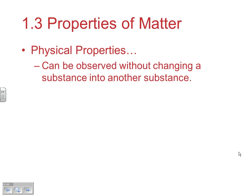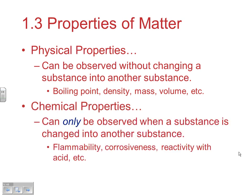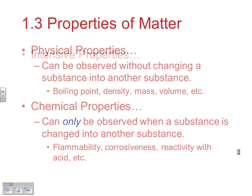Physical properties are properties that can be observed without changing into another substance — boiling point, density, mass, volume. Boiling changes a liquid to a gas, but it's still the same substance. Chemical properties can only be observed when a substance is changed into another substance — flammability, corrosiveness, reactivity with acid. Those can only be observed when the substance is changing into something new.